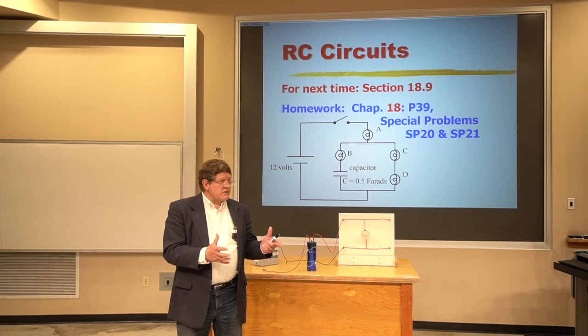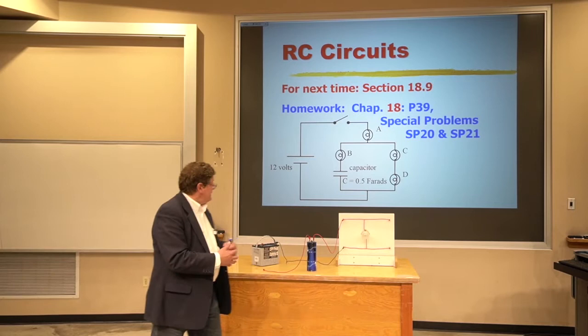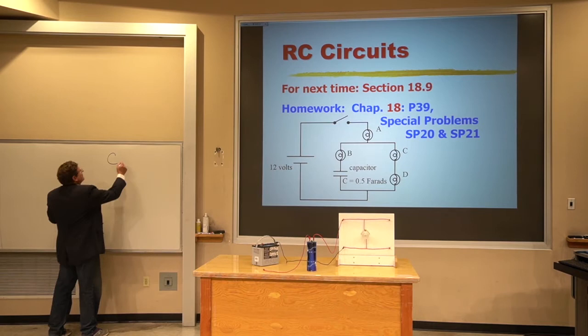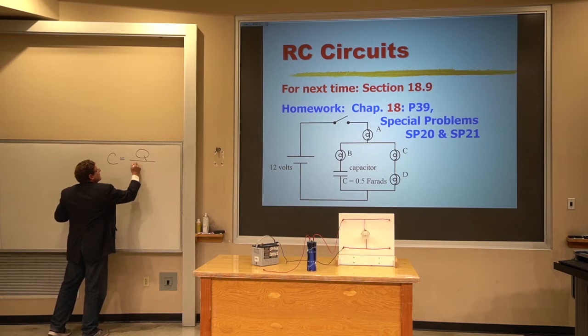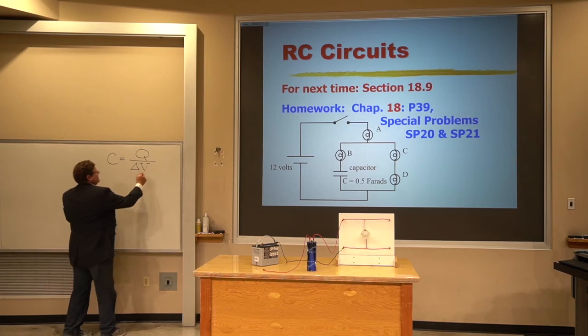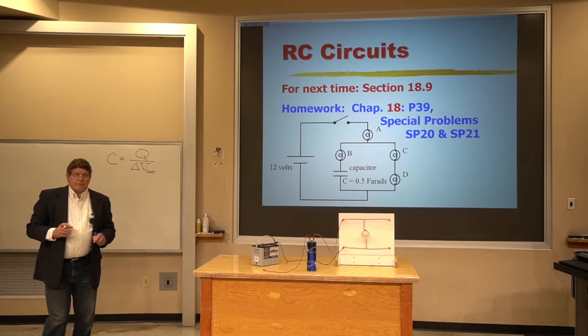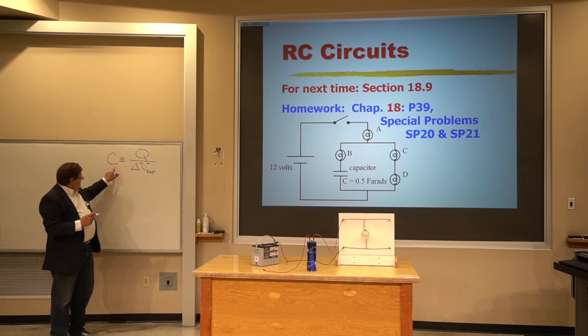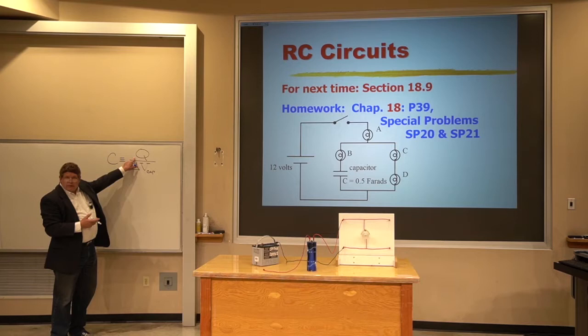You remember from our lecture on capacitors that they store charge and also energy — electrostatic potential energy. The definition of capacitance, or the ability to store charge, was just how much charge it could store for each one volt rise in the voltage across the capacitor. If the change in voltage is one, then the capacitance — how much it can hold — is the charge on the capacitor.